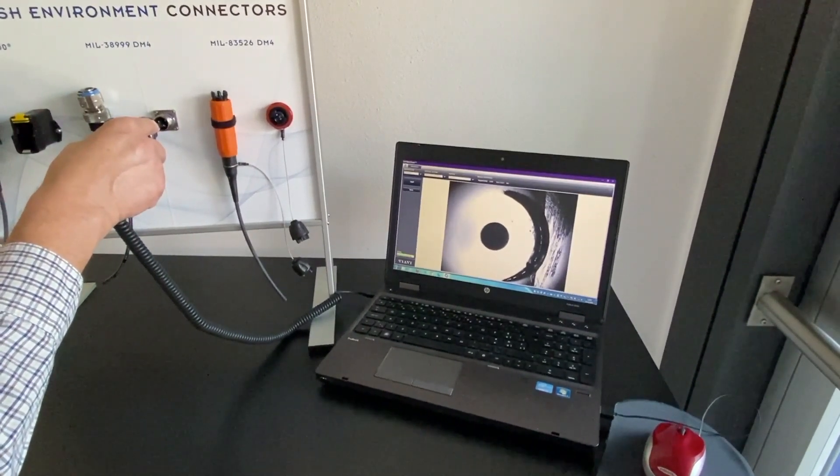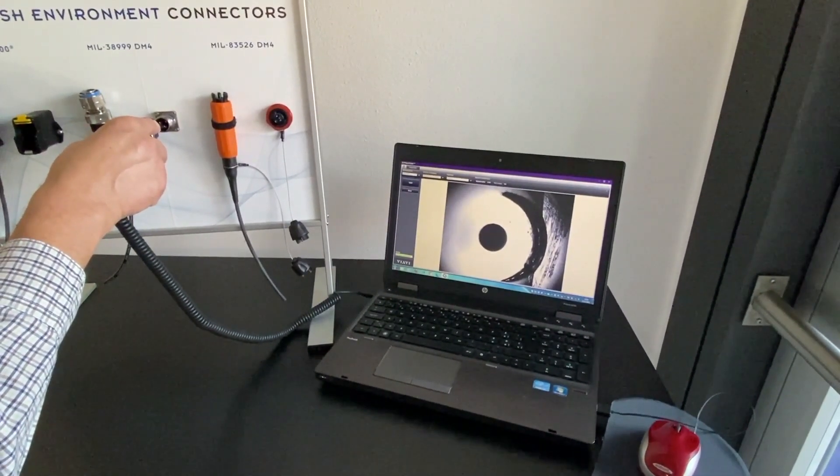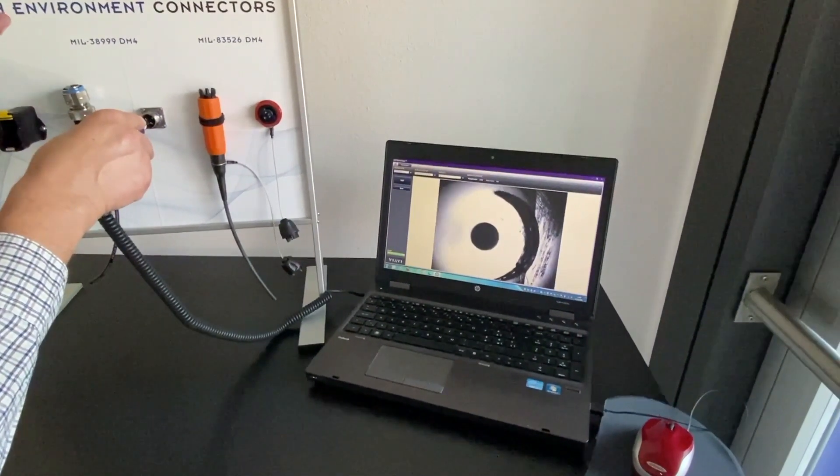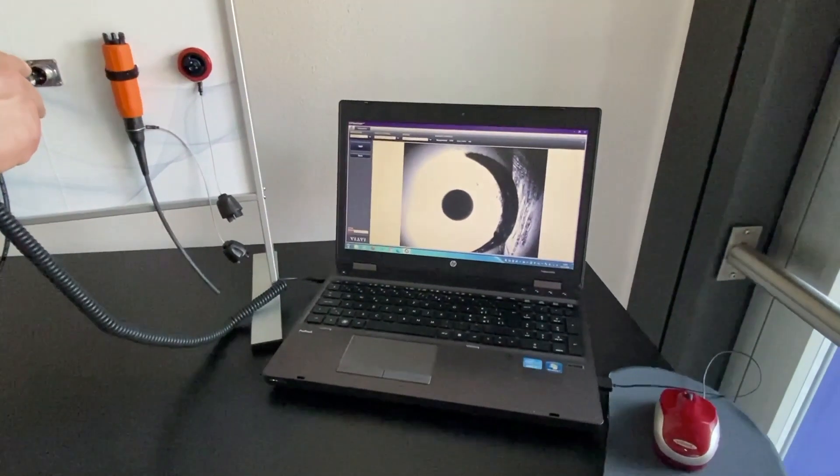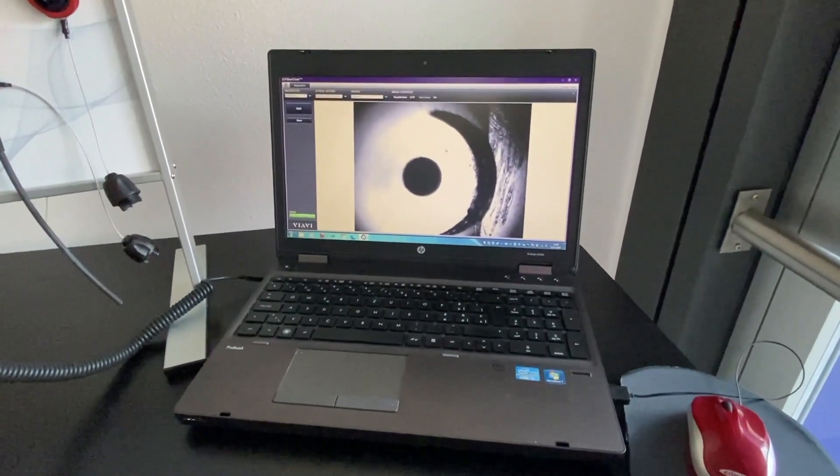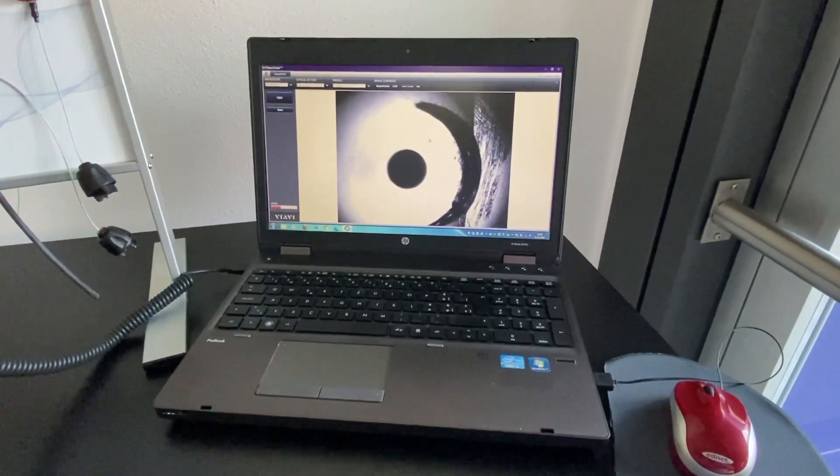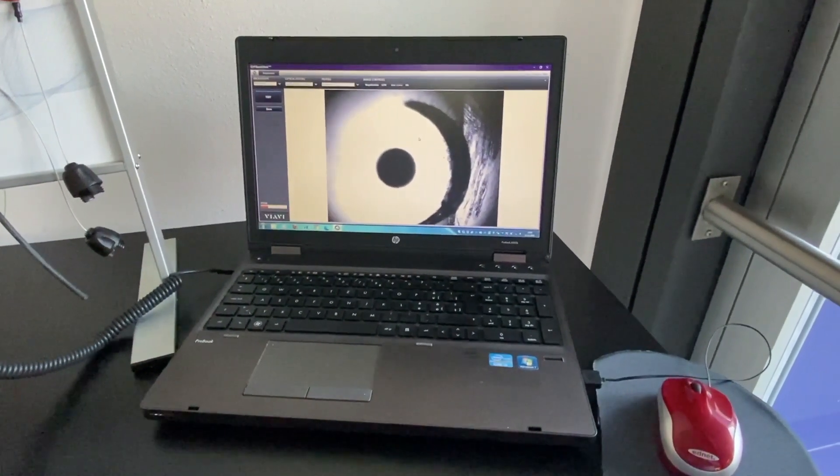You can, however, go in setup and correct the illumination. Increase it or decrease it. You can save your images. But, that is also valid for the OLP-82 microscope. You can save the images and then download it on the PC. Thank you.